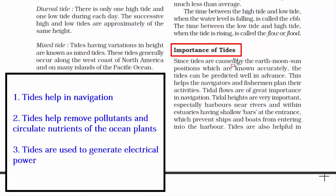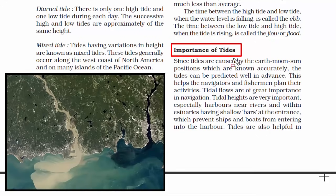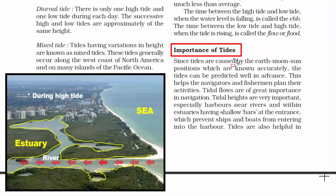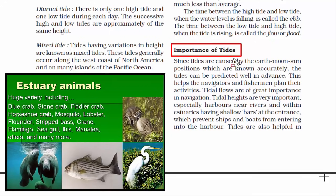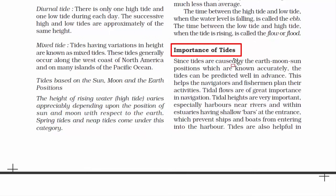The second advantage: tides help remove pollutants and circulate nutrients. Estuaries — where rivers merge with the ocean — accumulate sediments and can become polluted. High tides help circulate that polluted water. Estuaries are also breeding areas for many water animals and plants, and high tides move floating animals and plants from estuaries to deeper waters.